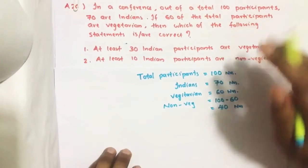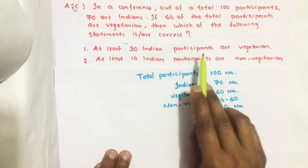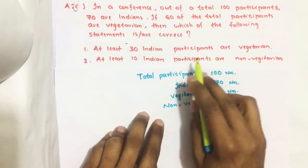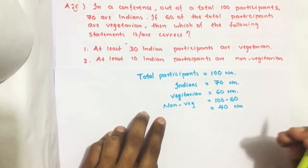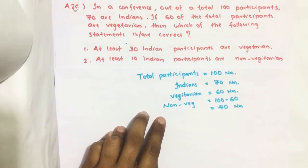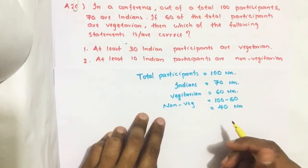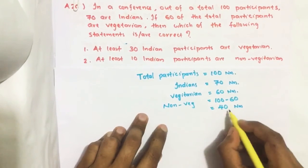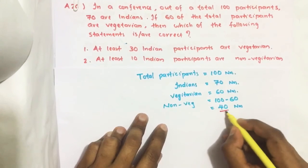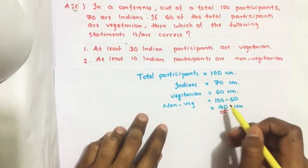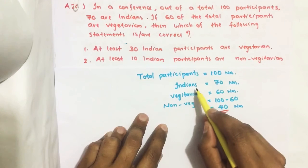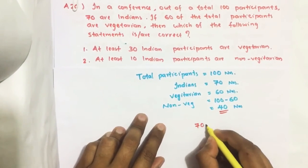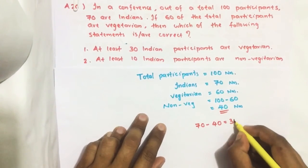Now let us read the first statement. At least 30 Indian participants are vegetarian. Suppose all these non-vegetarian people are from India. Then how many, all these 40 number of non-vegetarians are from India, then how many Indians are there who are vegetarian? 70 minus 40, we get 30.